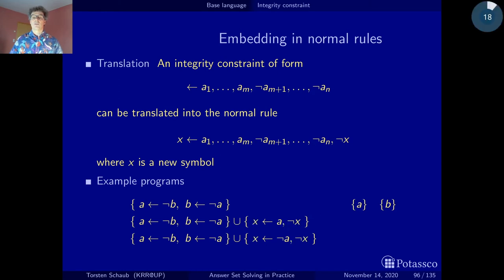Now let's do this translation. What we do here is we add the artificial atom to the head, and we get it in a negated way to the body, and the same here to the other integrity constraint.